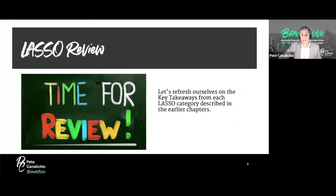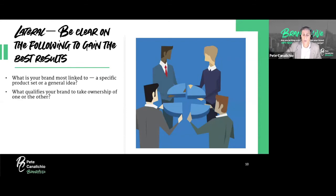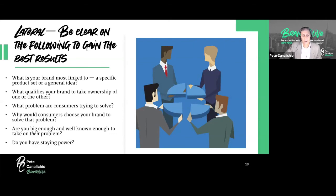Let's refresh ourselves on the key takeaways from each LASSO category. Starting with Lateral — be clear on the following: What is your brand most linked to, a specific product set or a general idea? What qualifies your brand to take ownership of one or the other? What problem are consumers trying to solve that your brand takes care of? Why would consumers choose your brand to solve that problem?